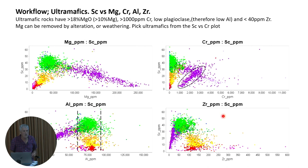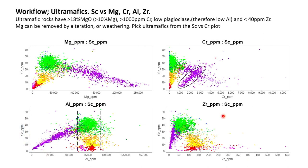My workflow involves making a series of scatter plots: first I'll pick out the ultramafics, then the tholeiitic magmas, then the calc-alkaline magmas, and then work out what kind of ultramafic, basalt, or felsic rock each one is.